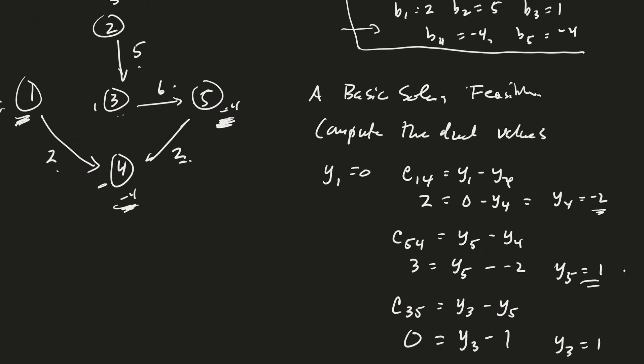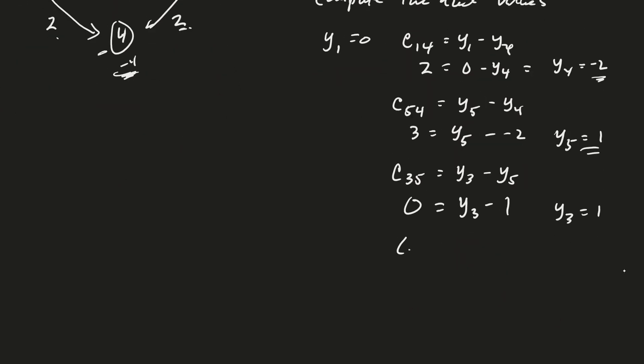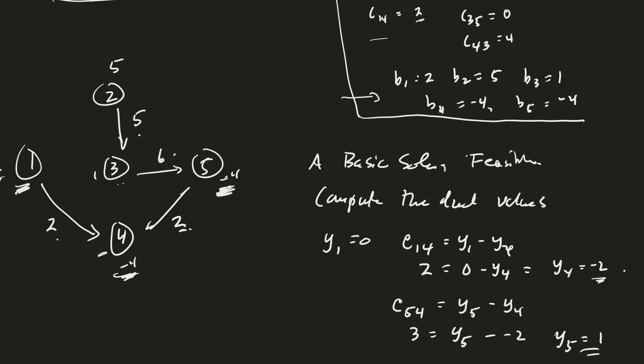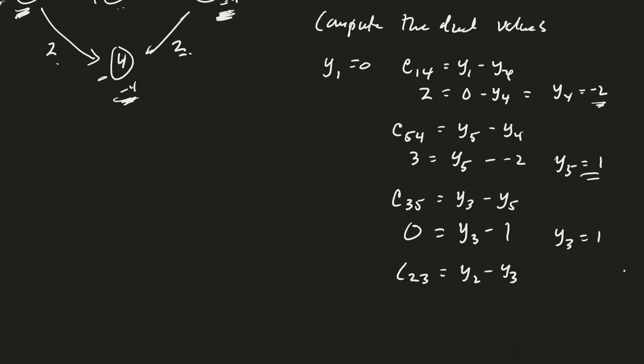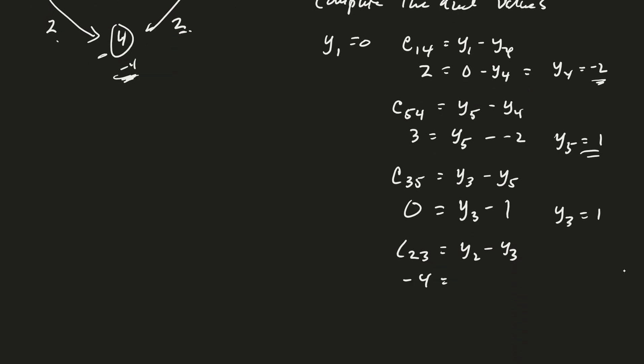And what other edges do I have now? c23. So c23 equals y2 minus y3. And c23, the cost was negative 4. So that was a really cheap one. And then y2 is my unknown. And my y3 is computed to be 1. Good. So therefore, y2 is negative 3. Good. So therefore, I now have my y's. And in fact, I could even list them over on the side here. y1 is equal to 0. y2 is equal to negative 3. y3 is equal to 1. y4 is equal to minus 2. And y5 is equal to 1.